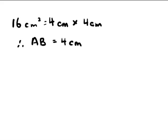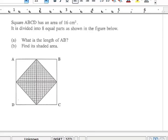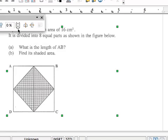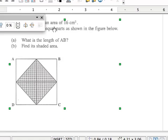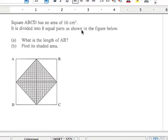Now, let's go back to the second question. The second question, part B, is actually a bit more tricky. It's actually very simple. The question says, find its shaded area. For this to be easy, you need to understand line number 2, which is over here. It is divided into 8 equal parts as shown in the figure.